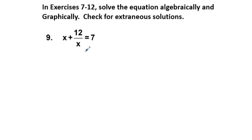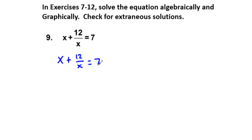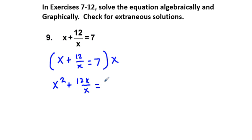Let's go on to problem 9. We have a very similar problem to problem 7. In this case, we have x plus 12 over x equals 7. We're going to go through the same process. We take x plus 12 over x equals 7 and multiply by x, like we did before. We get x squared plus 12x over x equals 7x.